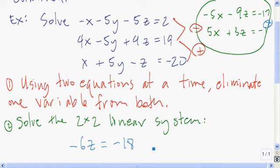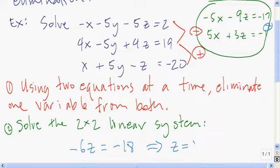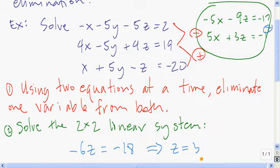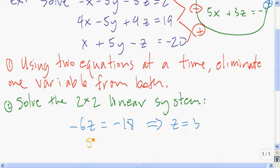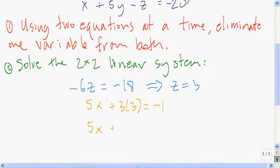Now we've dropped it down to just this one equation that has just z in it, so we can solve this for z. We get z is equal to 3. We take this value of z equals 3, and plug it into either of these two equations to find x. Putting it in the second equation: 5x plus 3 times 3 equals negative 1, or 5x plus 9 is negative 1. So 5x equals negative 10, or x equals negative 2.